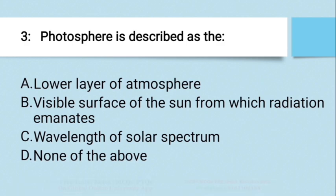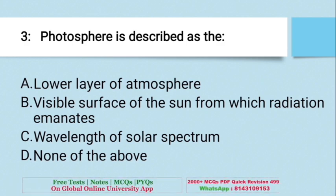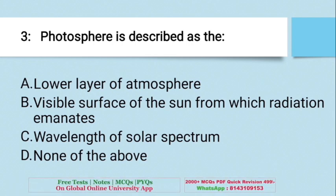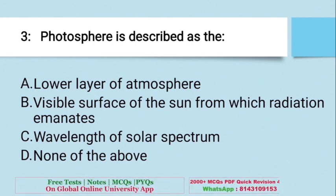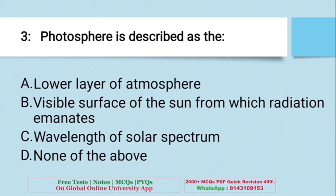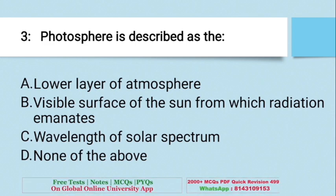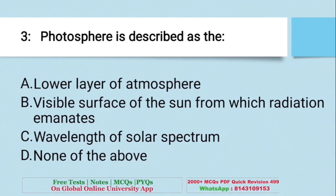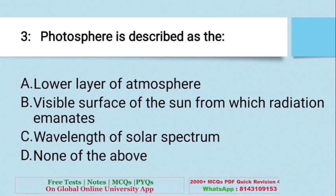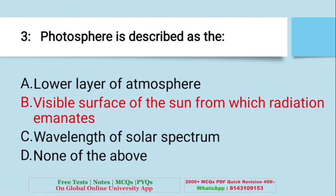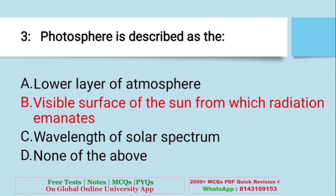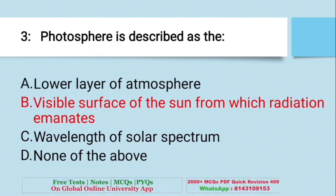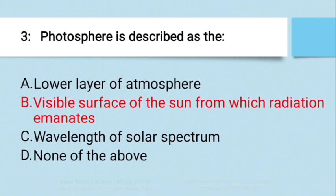Question: Photosphere is described as — A. Lower layer of atmosphere, B. Visible surface of the sun from which radiation emanates, C. Wavelength of solar spectrum, D. None of the above. The right answer is B — the visible surface of the sun from which radiation emanates is called the photosphere.